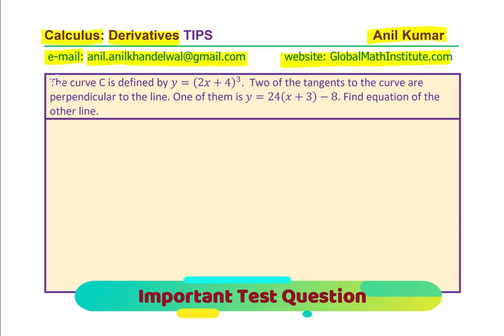The problem given to us is: the curve C is defined by y equals to (2x + 4) cubed. Two of the tangents to the curve are perpendicular to the line. One of them is y equals to 24(x + 3) minus 8. Find the equation of the other tangent line. I hope the question is absolutely clear — you can pause the video, attempt an answer, and then look into my suggestions.